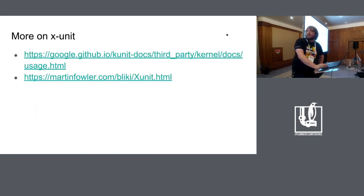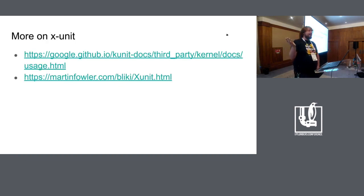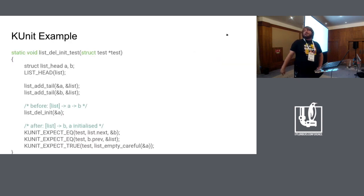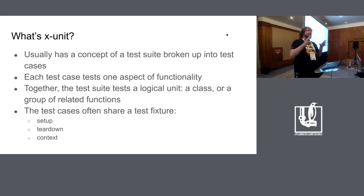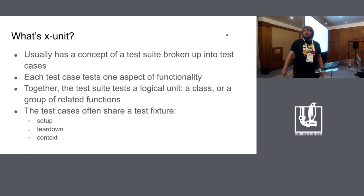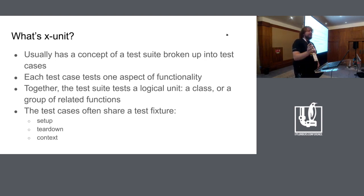I don't really want to talk much about the XUnit stuff — we already looked at an example. XUnit is basically a really popular style framework for writing unit tests. You have setup code that runs before every test case, a collection of test cases, and then cleanup code that runs after every test case. That's the pattern I followed with KUnit. There's a better example we can look at if anyone wants to see it, but I think it's pretty self-explanatory.